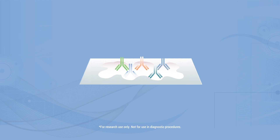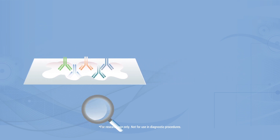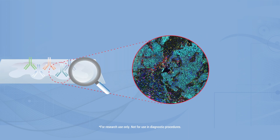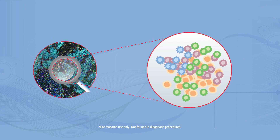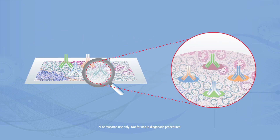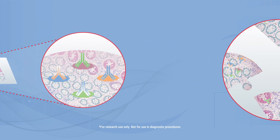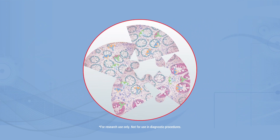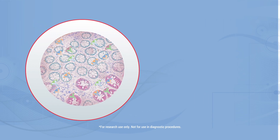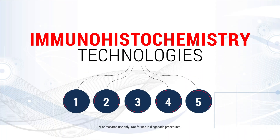Emerging immunohistochemistry multiplex technologies are creating great opportunities in the domain of cancer tumor microenvironment. Multiplex advanced staining can detect multiple markers simultaneously within a single tissue sample, while providing comprehensive information about cellular and protein composition and spatial arrangement. There are many great reasons why you should be considering introducing multiplex immunohistochemistry to your lab, and we will discuss just five of these.